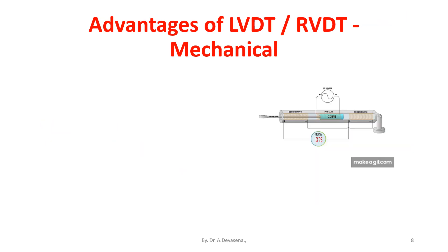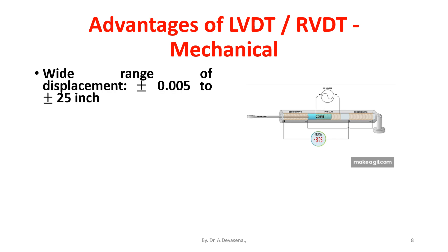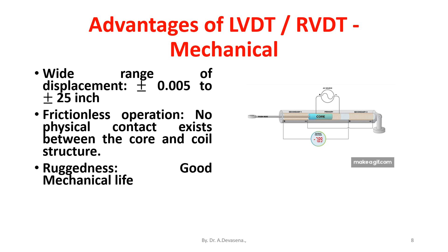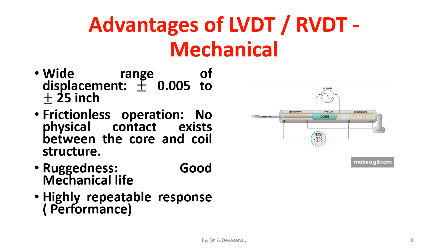The mechanical advantages of LVDT include: a wide range of displacement from plus or minus 0.005 to plus or minus 2.5 inches; frictionless operation with no physical contact between the core and coil structure; ruggedness and good mechanical life; insensitive to temperature changes; and highly repeatable response and performance.